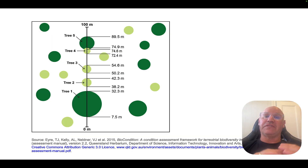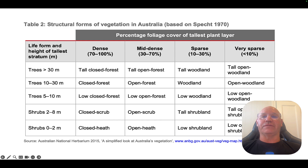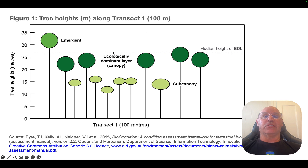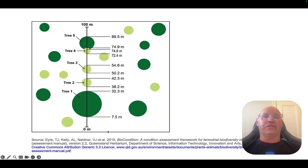Next we need to work out the percentage foliage cover. The SPEC's tool specifies the percentage foliage cover of the dominant layer — the ecologically dominant layer. We have dark green trees representing the dominant layer and light green ones which we're not going to count. We're looking at a 100-metre transect running through the ecosystem, and we're working out what percentage of this transect is covered by the dominant layer.